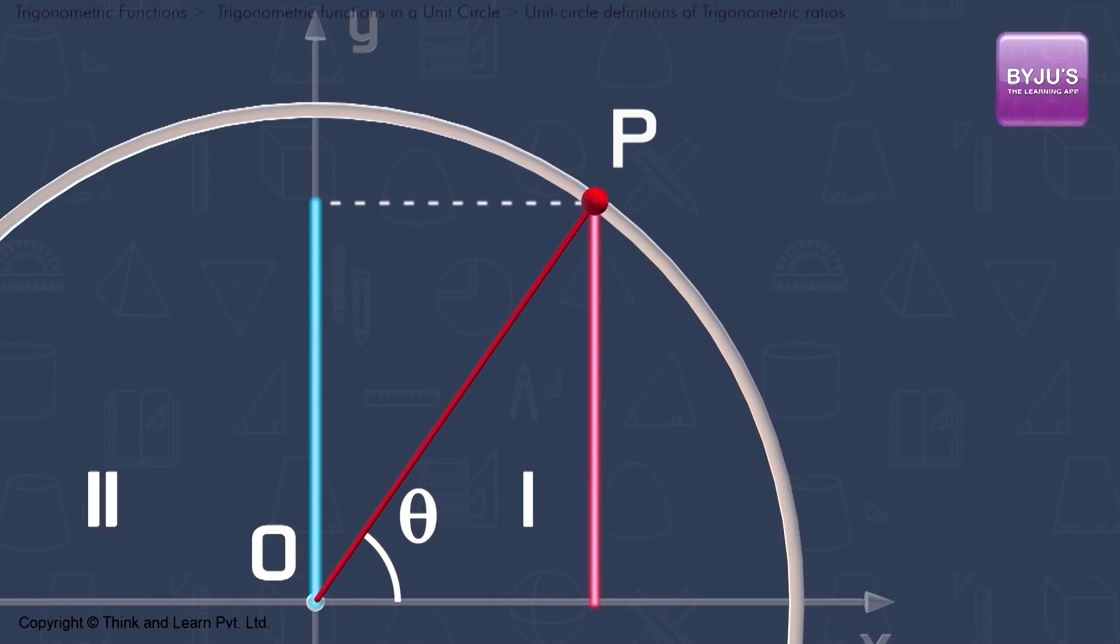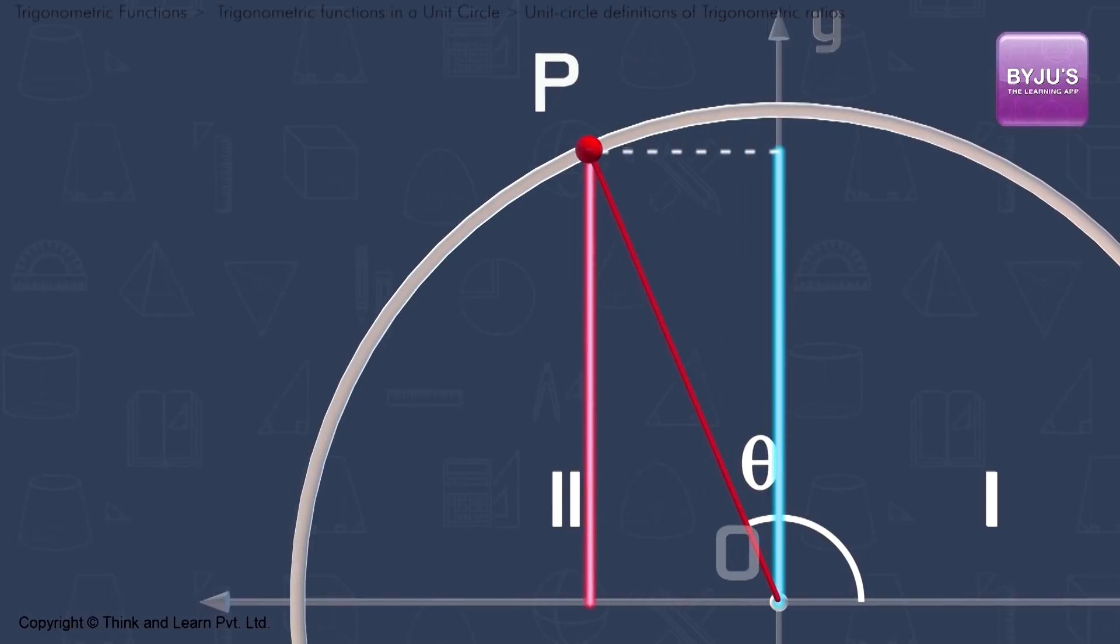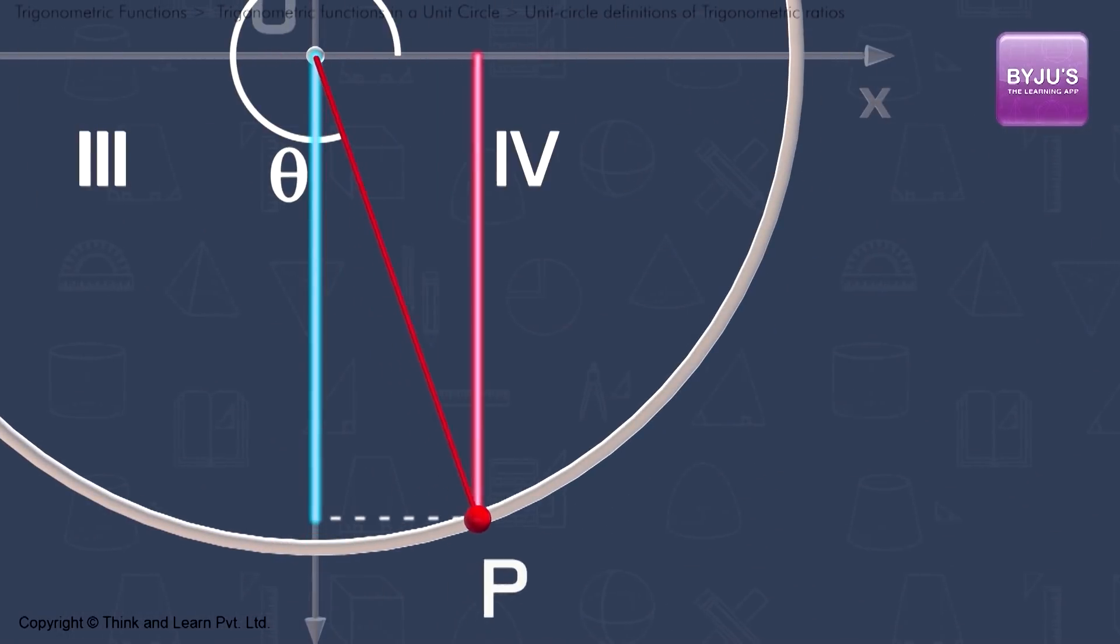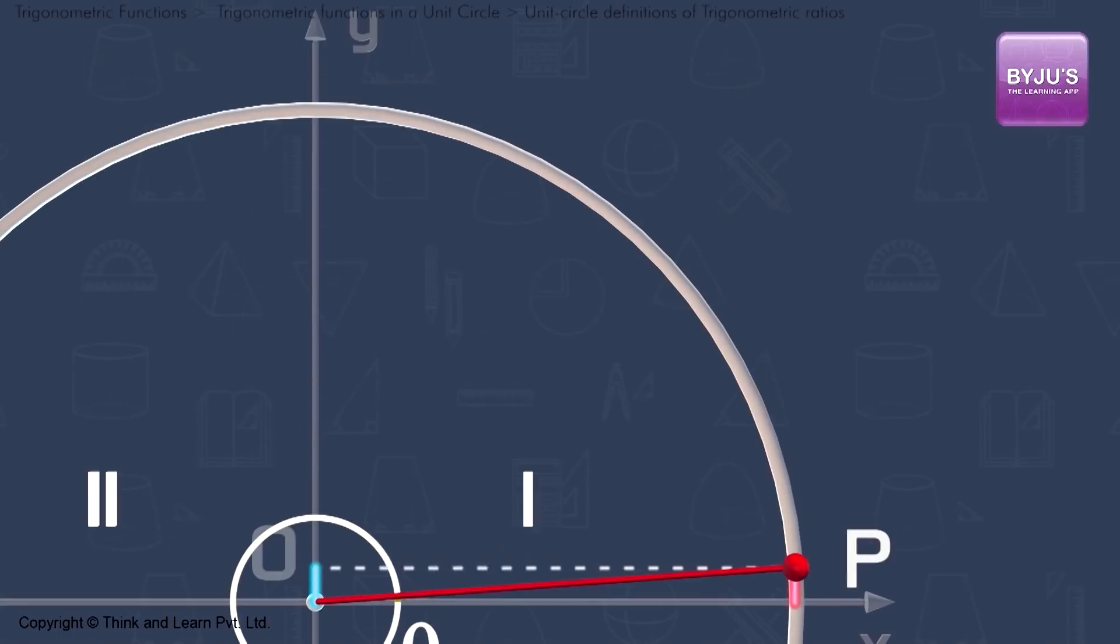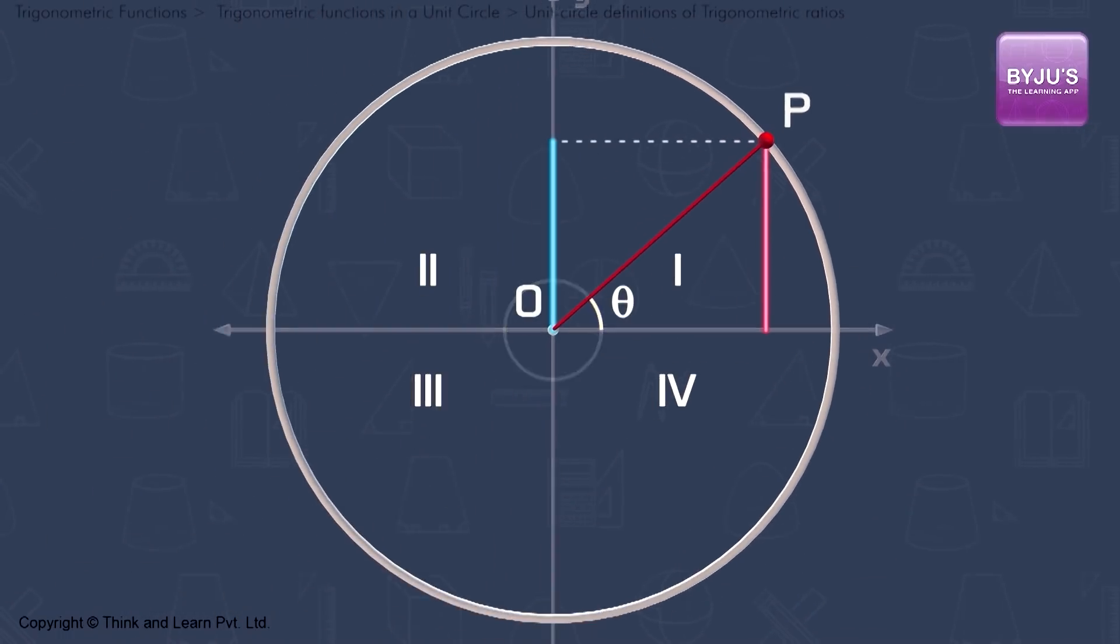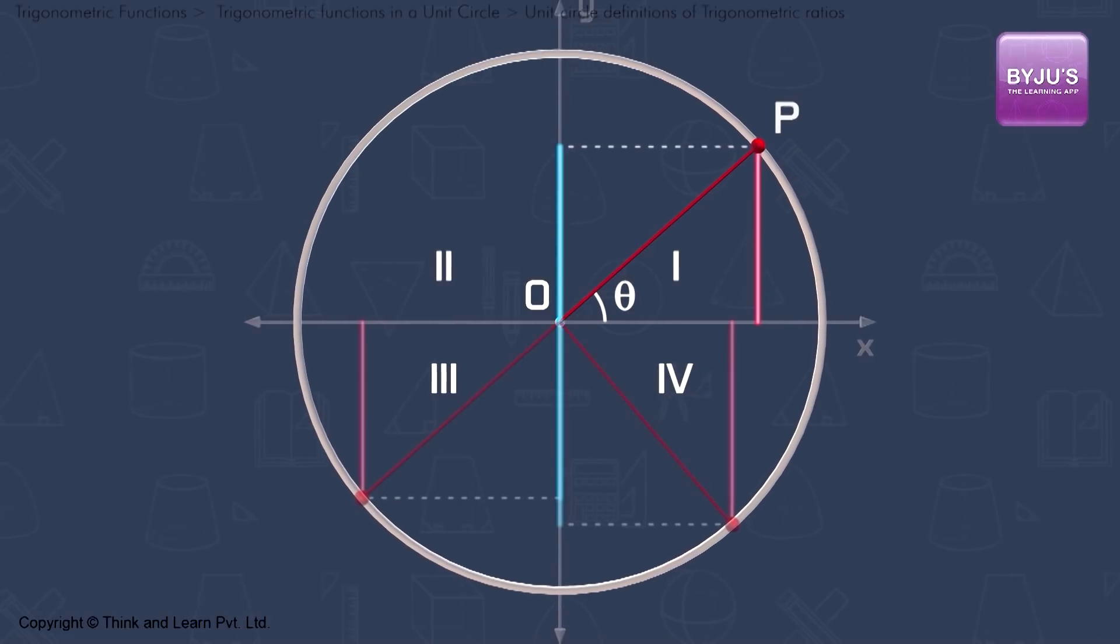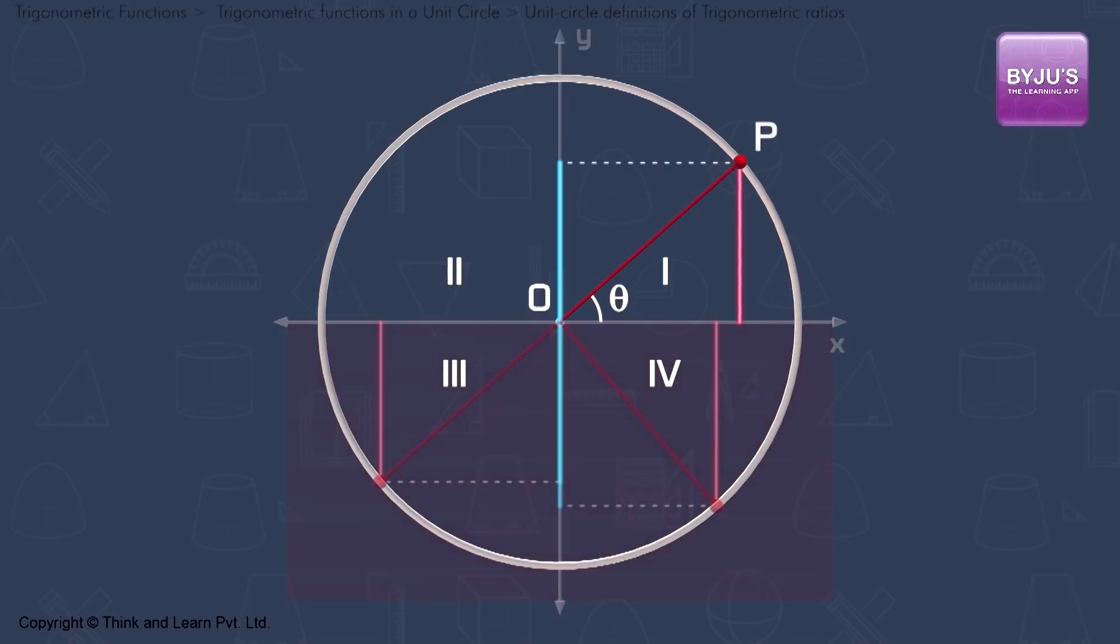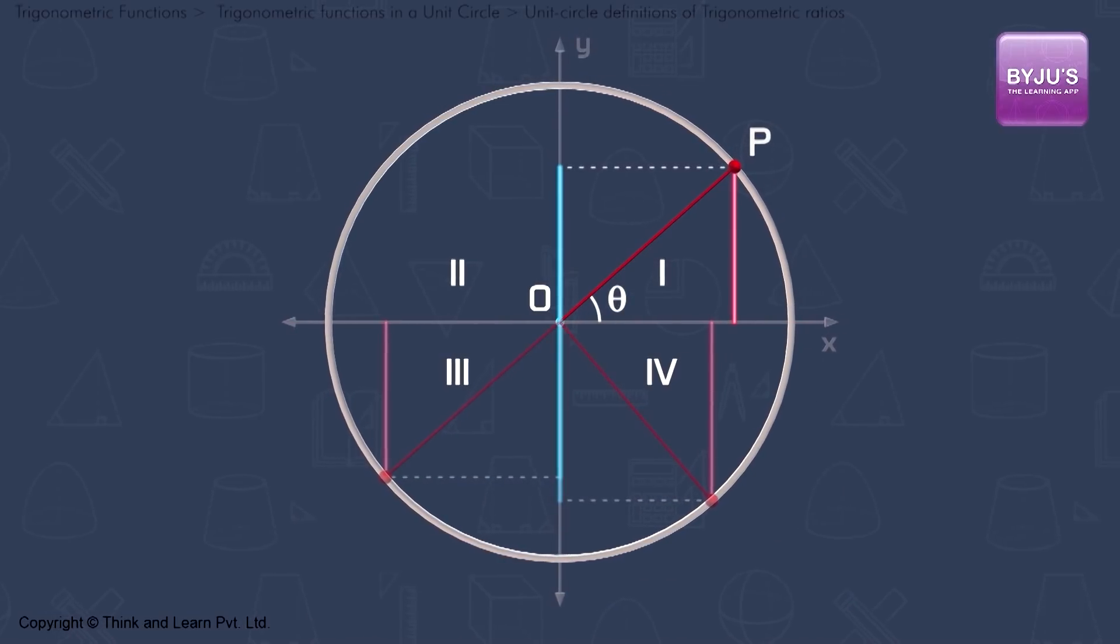When OP rotates to 2nd, 3rd or 4th quadrants, the same definitions will still apply. So this way we can define sine of any angle. Remember in the 3rd and 4th quadrants, the projection on y-axis will be negative, so sin θ will also be negative.